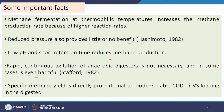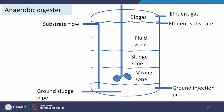Specific methane yield is directly proportional to the biodegradable COD or VS loading in the digester. Inside the digester there are different layers: a mixing zone, sludge zone, fluid zone, biogas zone at the top, and ground sludge at the bottom. Without mixing, stratification occurs; some mixing is necessary to maintain uniformity. Mixing helps reduce the natural stratification that occurs in a low-profile tank.